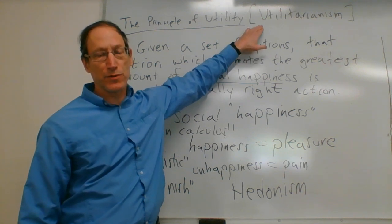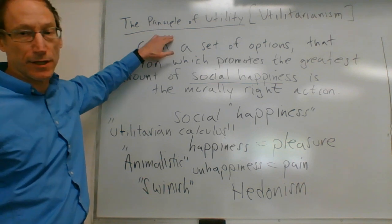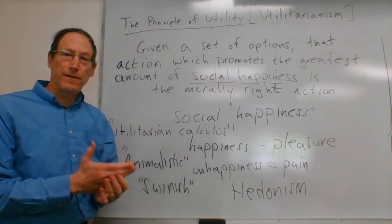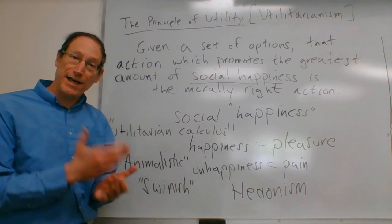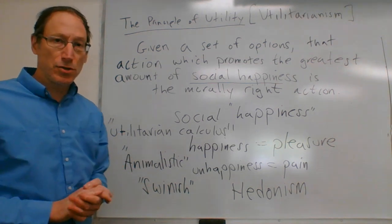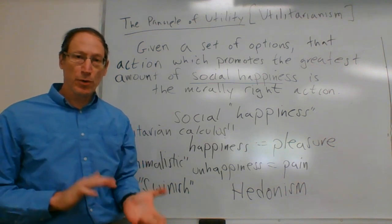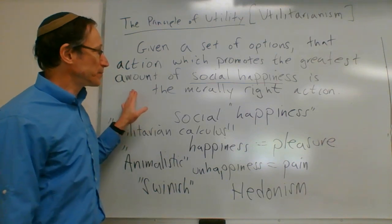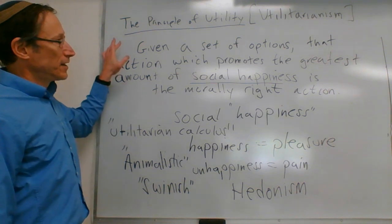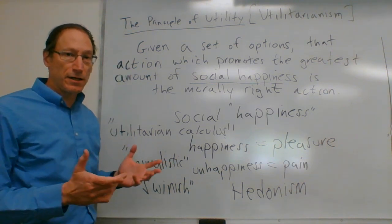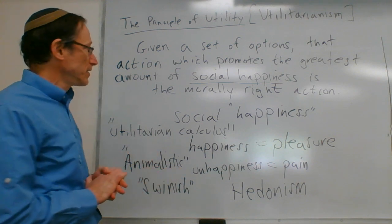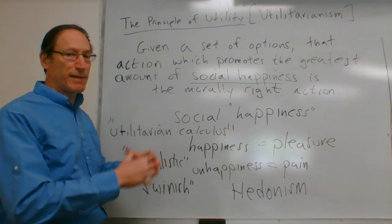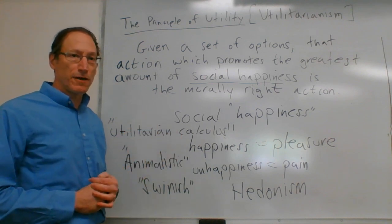Utilitarianism is the theory that promotes the principle of utility. Mill believes there is a fundamental moral principle — a single rule usable in all circumstances to determine what is morally right or wrong — called the principle of utility. Given a set of options, the action which promotes the greatest amount of happiness in society at large is the right action.